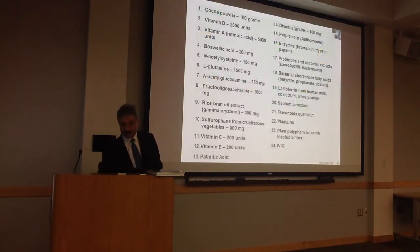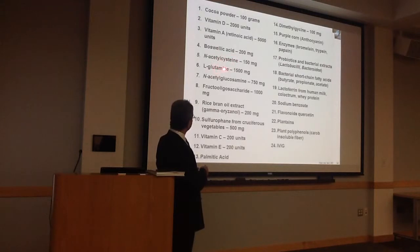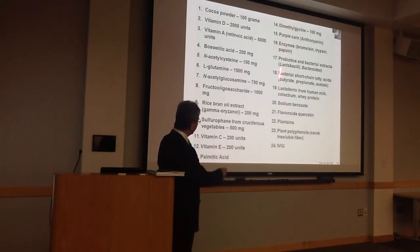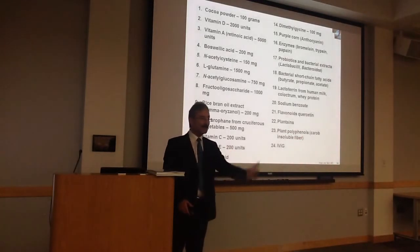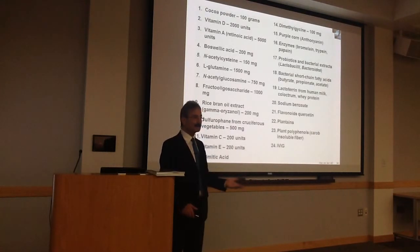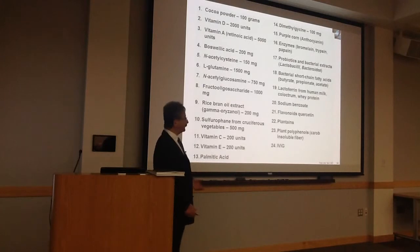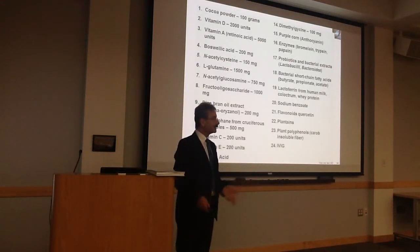Vitamins in this particular case can activate T-regulatory cells and prevent autoimmunity. Please pay attention to myths like this. Cocoa powder, vitamin D, vitamin A, N-acetylcysteine, glutathione, L-glutamine, rice bran, vitamin C, vitamin E, and many others — all of that matters. If your patient does not improve with all of that, you may need to give them intravenous immunoglobulins, or even doxycycline or minocycline, which are anti-inflammatory. Thank you so much.